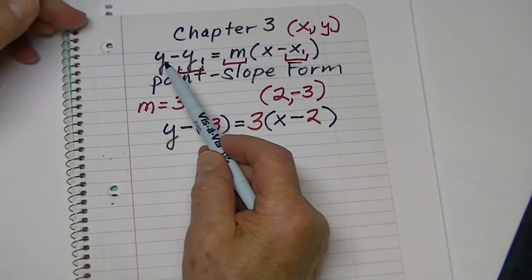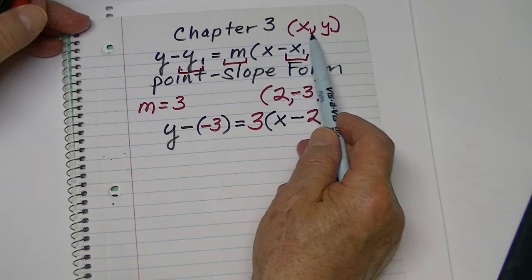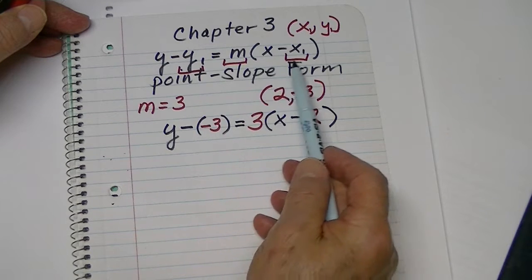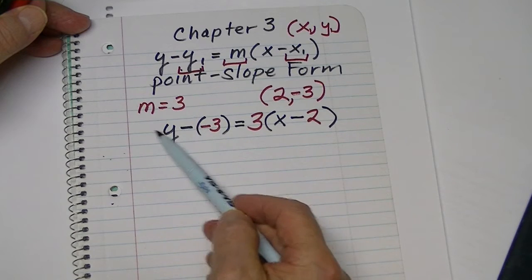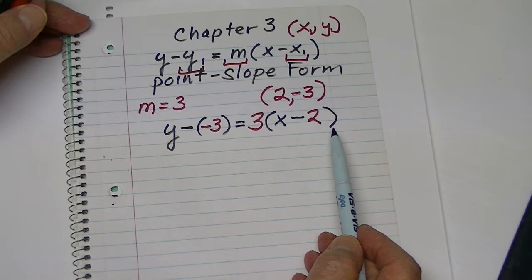So, all we've done is we've taken our point-slope form. We have a single point, and we have the slope, and we've substituted this value, or these values, into our equation.